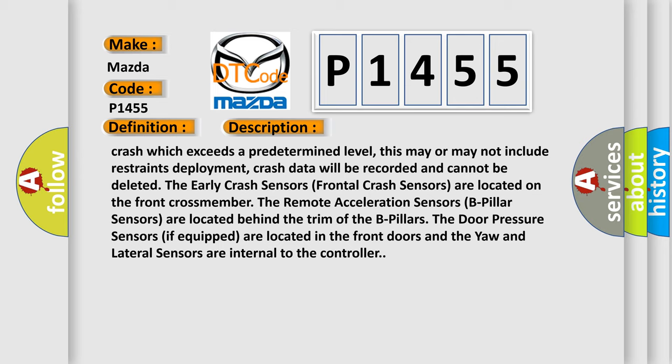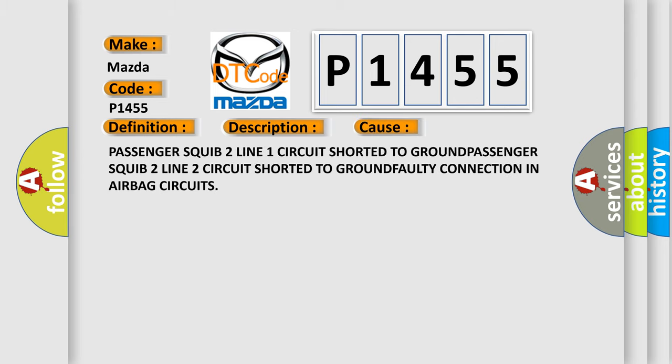This diagnostic error occurs most often in these cases: passenger squib 2 line 1 circuit short to ground, passenger squib 2 line 2 circuit short to ground, or a faulty connection in the airbag circuits.